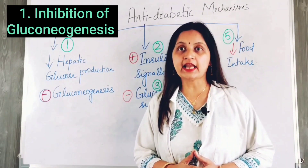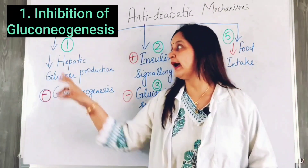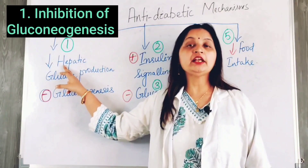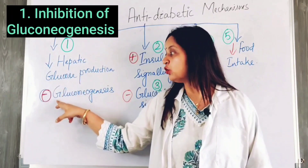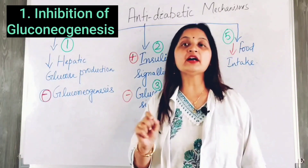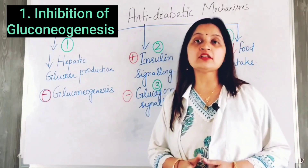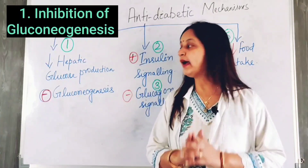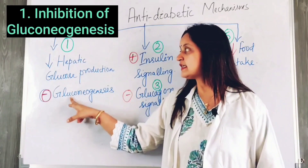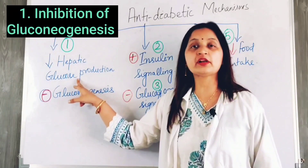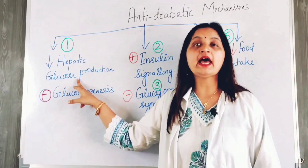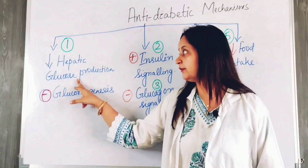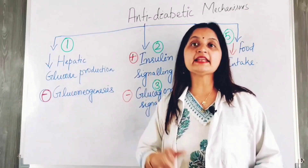Metformin acts as an anti-diabetic drug primarily by inhibiting the hepatic glucose production. It does so by inhibiting gluconeogenesis, a pathway that is responsible for the formation of glucose from amino acids. By inhibiting gluconeogenesis, the glucose production by the liver is reduced and this helps in lowering the blood glucose levels.